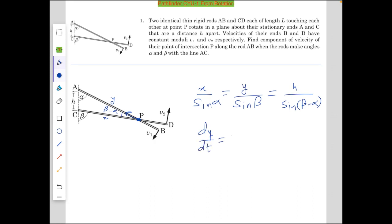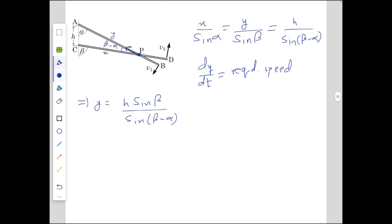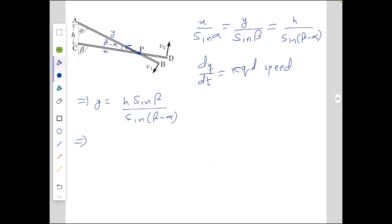What we can get from here is that y equals h sine beta over sine of (beta minus alpha). So dy/dt equals, the denominator becomes sine squared (beta minus alpha).